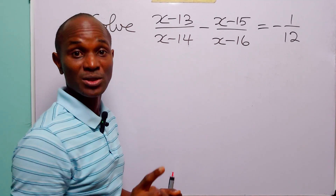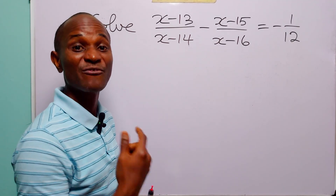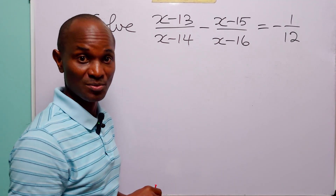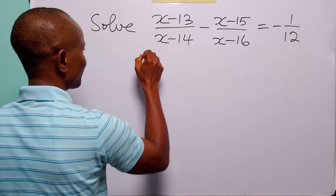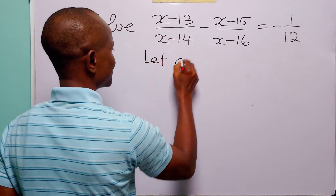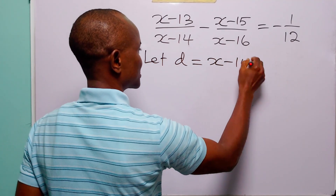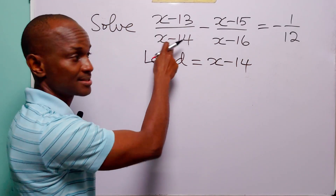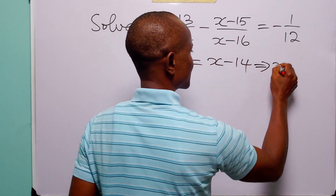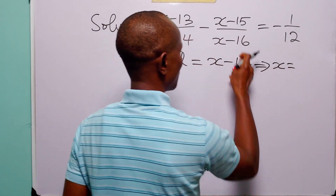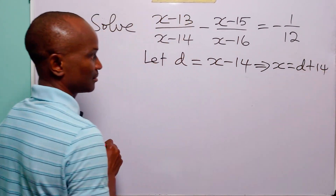So to make life easy for ourselves and avoid these double-digit number multiplications, we are going to start this solution with a very simple substitution. Let d be equal to x minus 14 — that is this — and of course from here we have that x is equal to d plus 14.